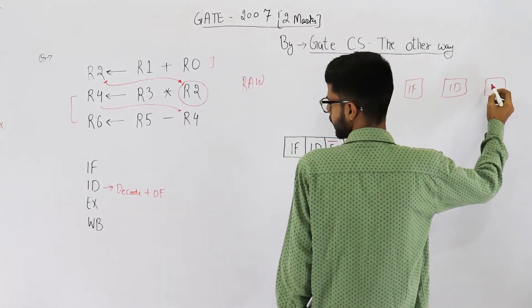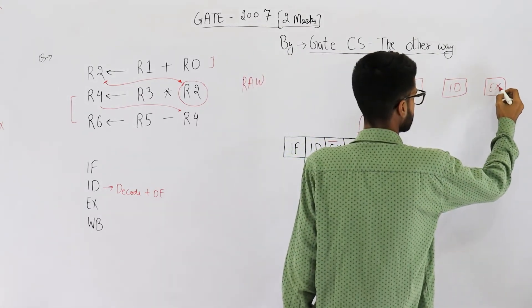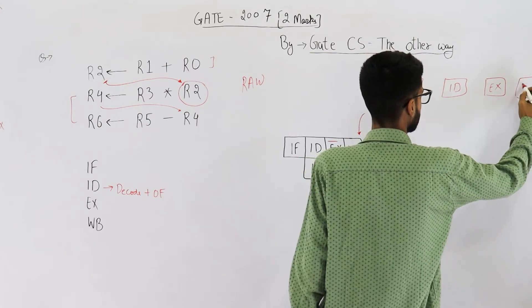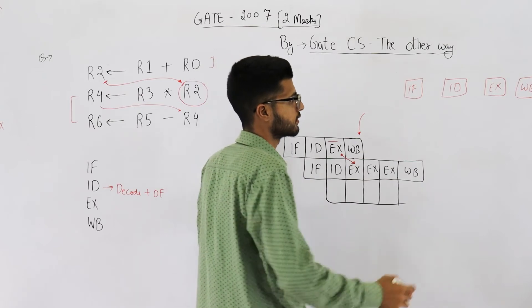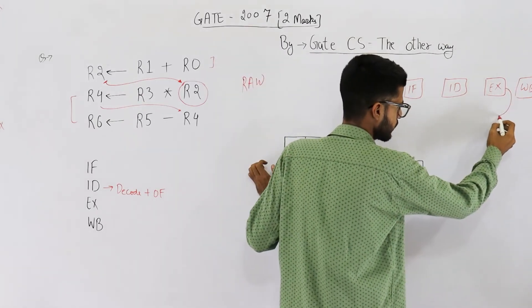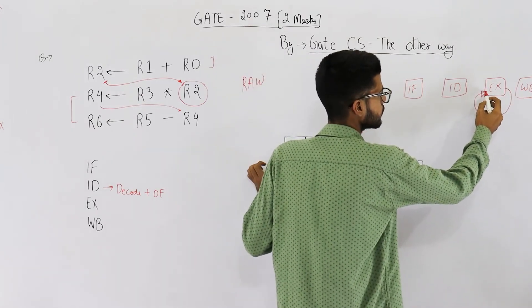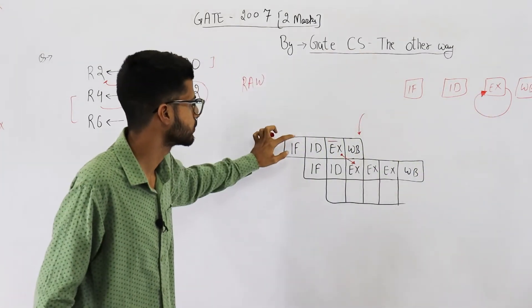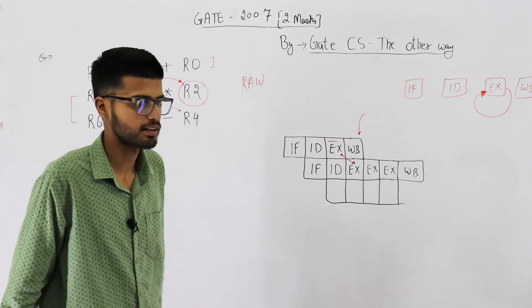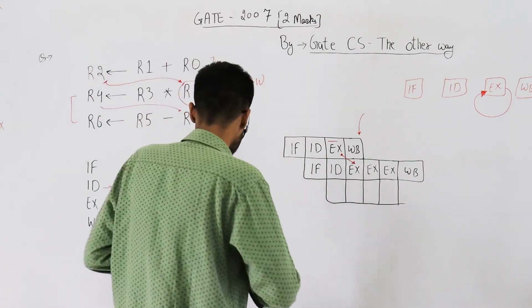This is ID and then this is execute, the next one is WB. Forwarding from execute to execute means we are doing this. We have only one hardware for execute, it is being used by different instructions at different times.